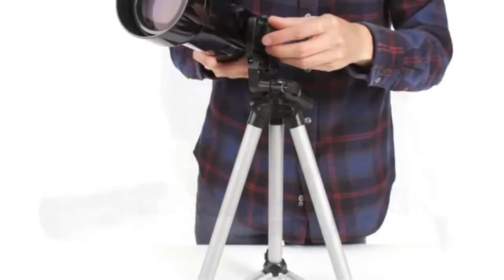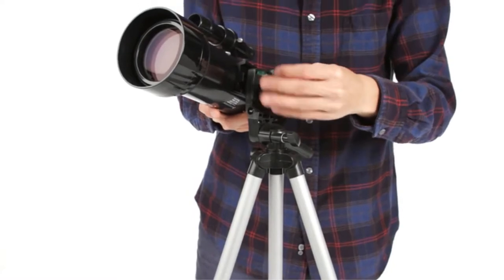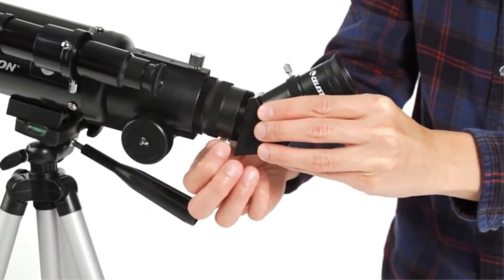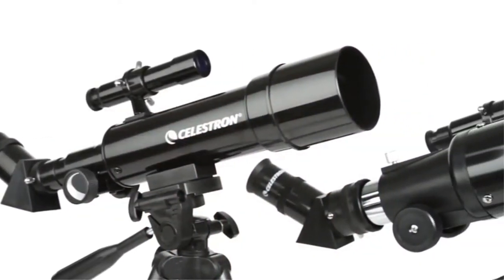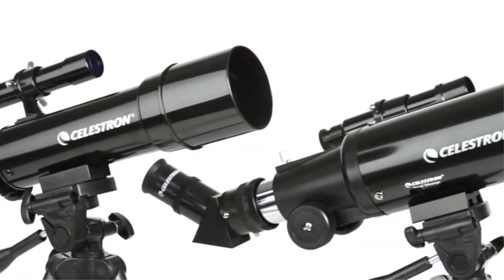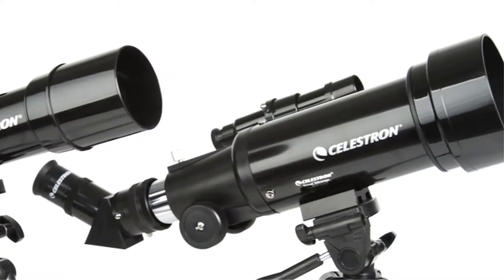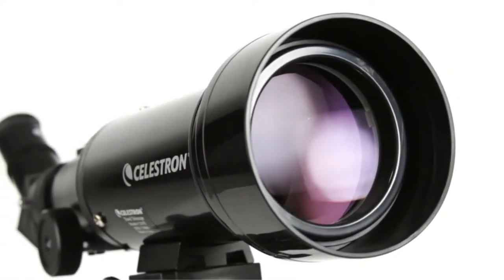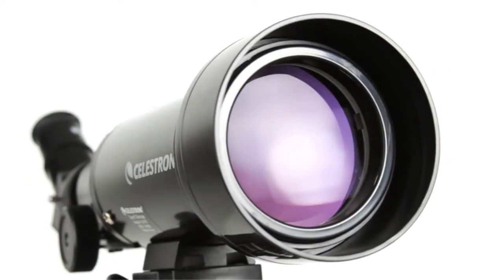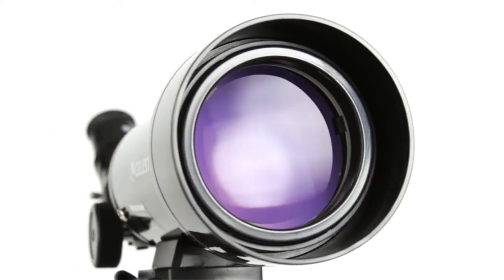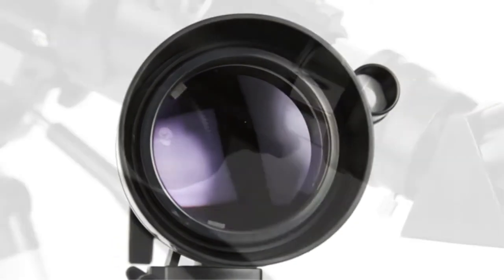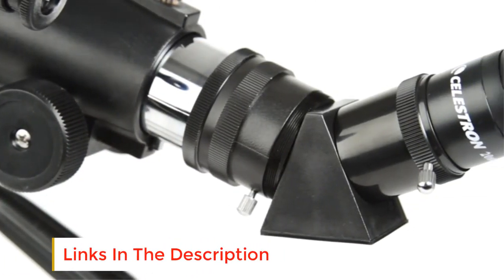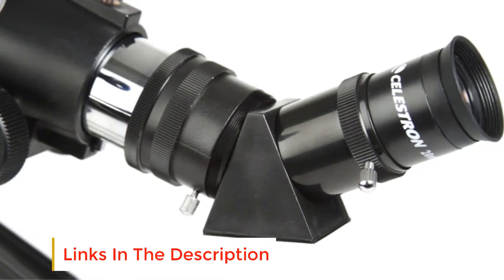The Celestron 70mm portable scope is excellent for beginner and intermediate astronomers and is one of the best telescopes under $100. The travel scope is equipped with top quality fully coated optics and a powerful 70mm objective lens. The telescope features two high-quality eyepieces of 10mm and 20mm that offer high and low power for viewing objects both in the day and night. The telescope has a very lightweight frame and comes with a custom backpack to carry the scope and all the accessories.